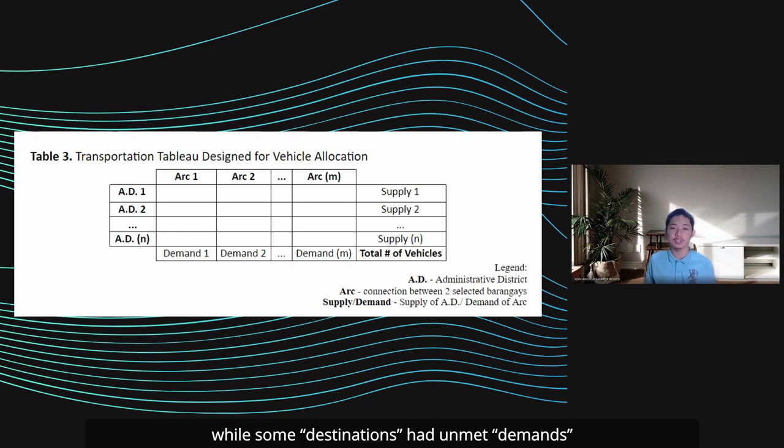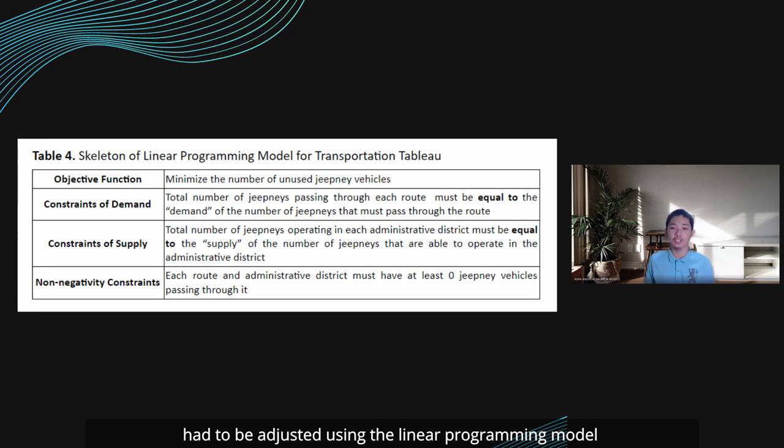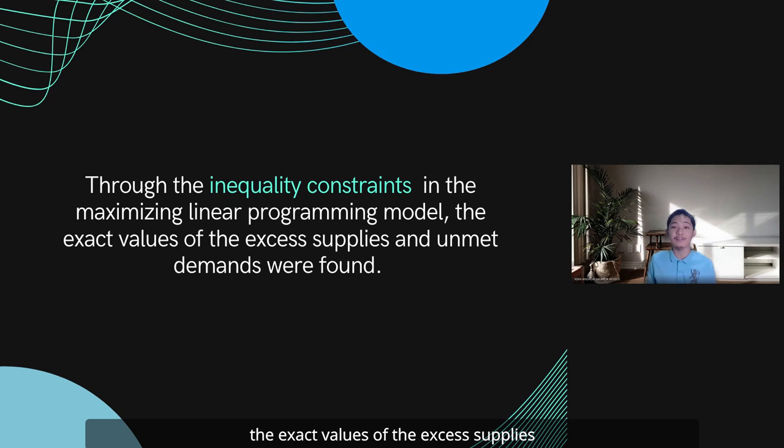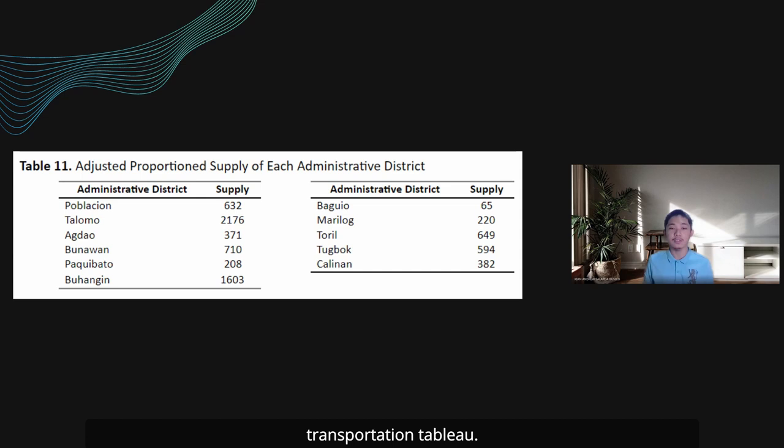the proportion supply of each administrative district had to be adjusted using the linear programming model in Table 4. Through the inequality constraints in the maximizing linear programming model, the exact values of the excess supplies and unmet demands were found. The proportion supply of each administrative district was adjusted accordingly, as shown in Table 11. With this, the supplies and demands will be balanced and organized into an updated and feasible transportation tableau.